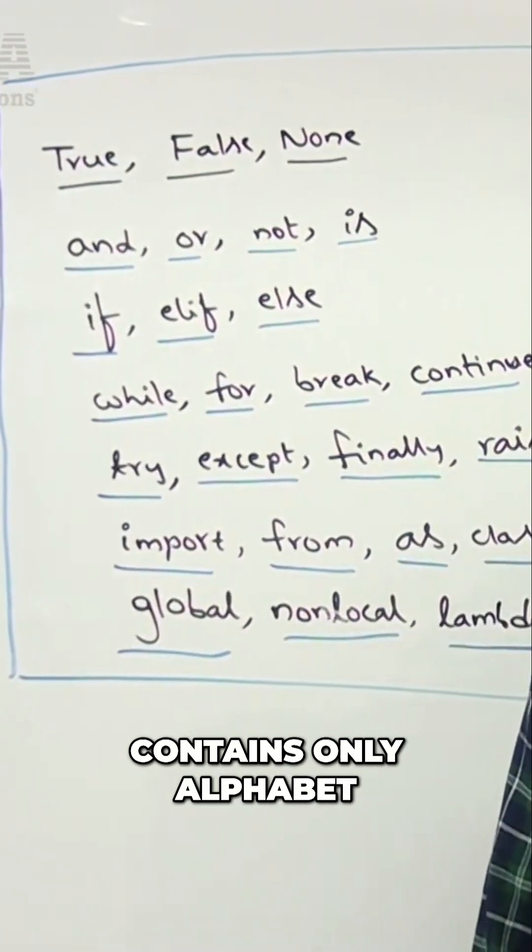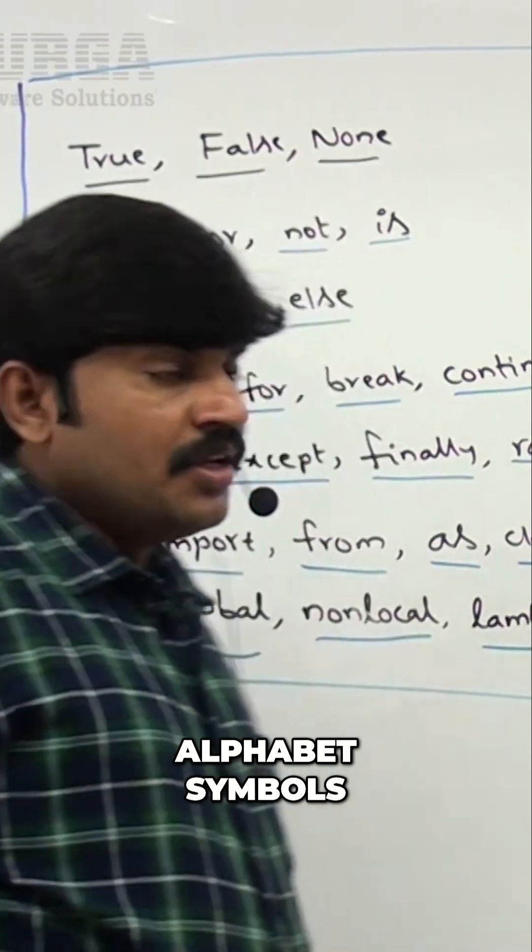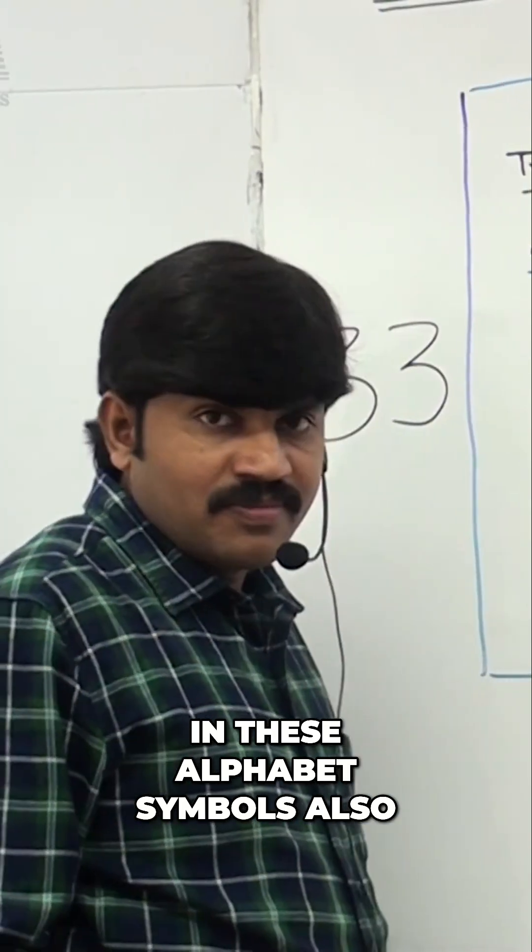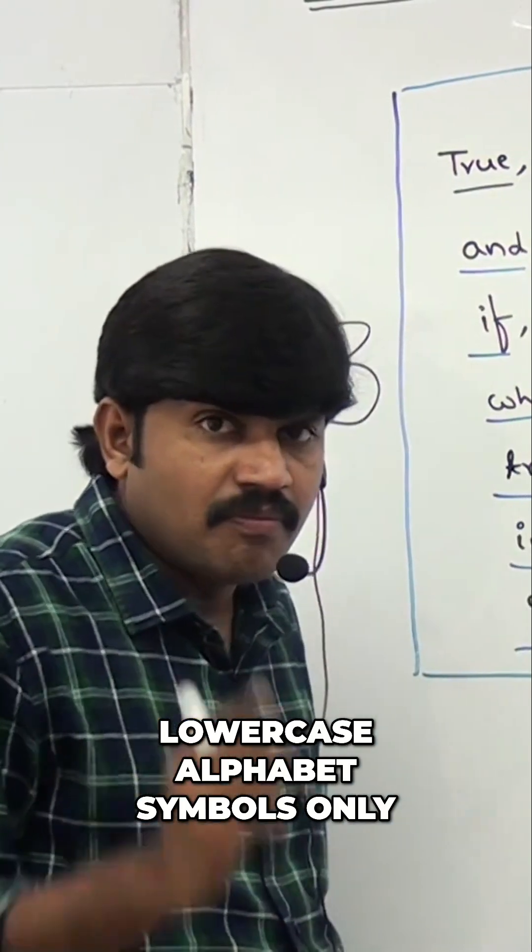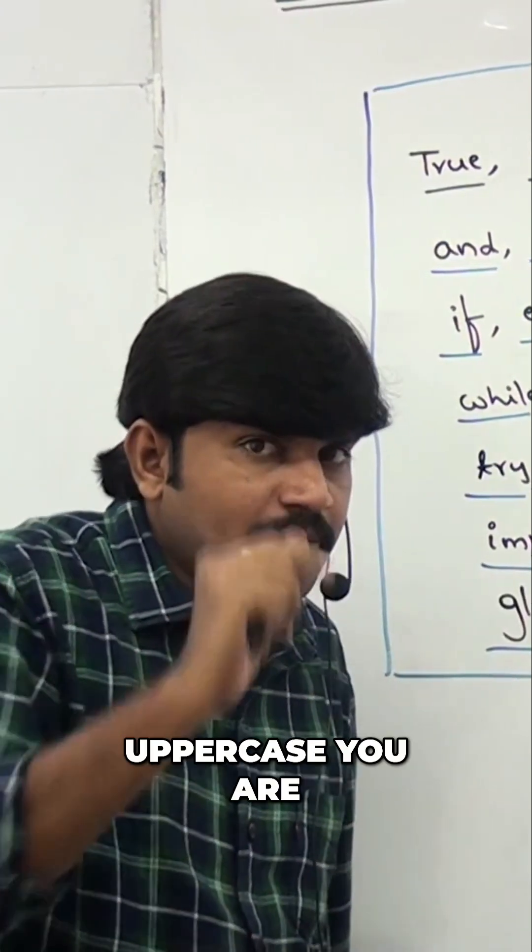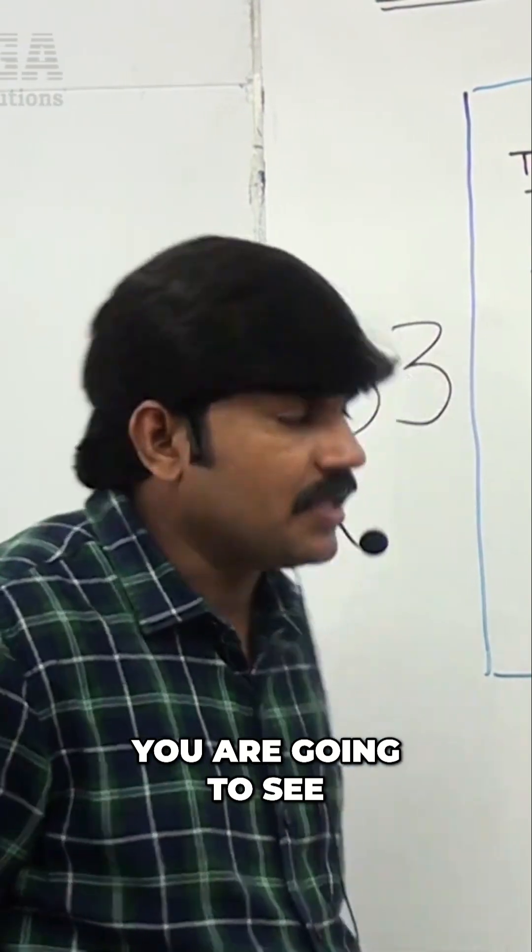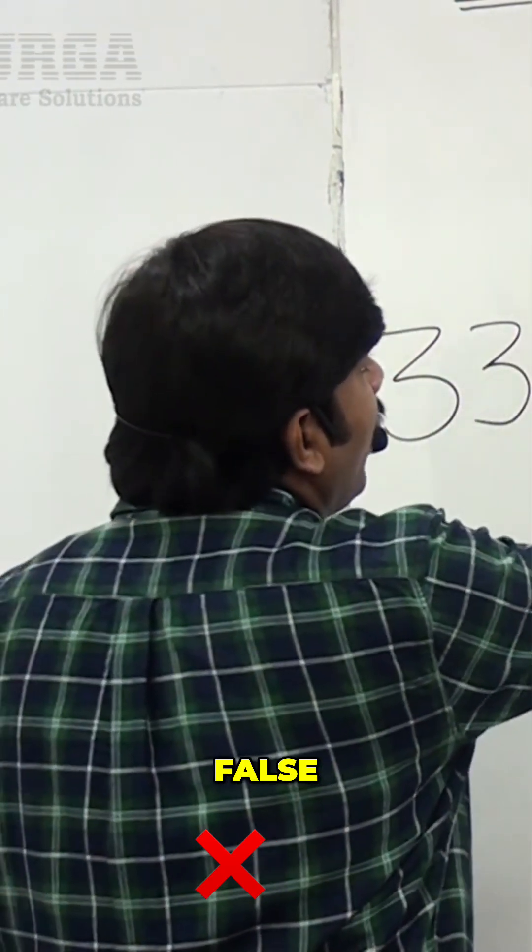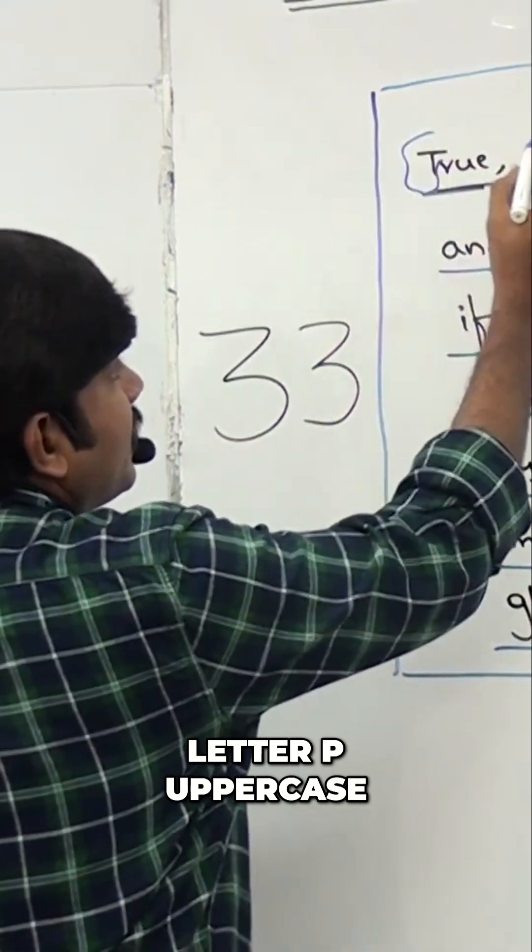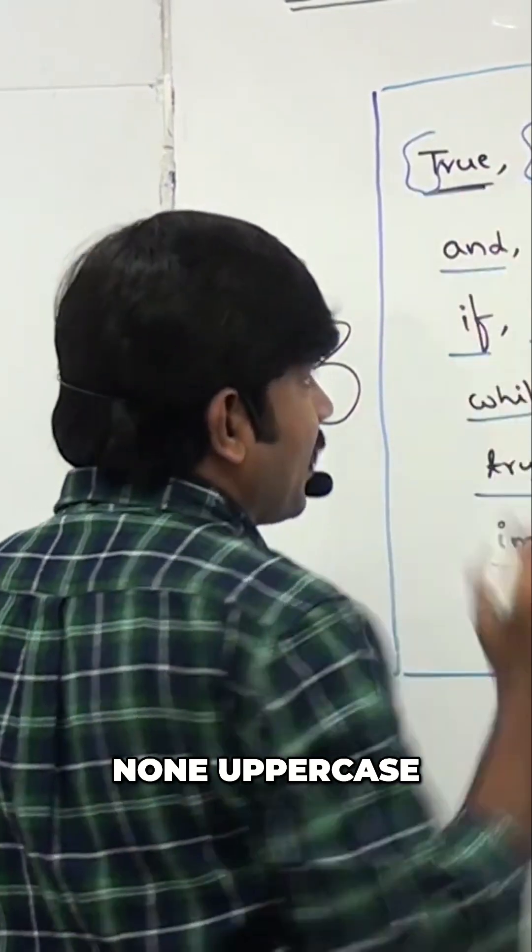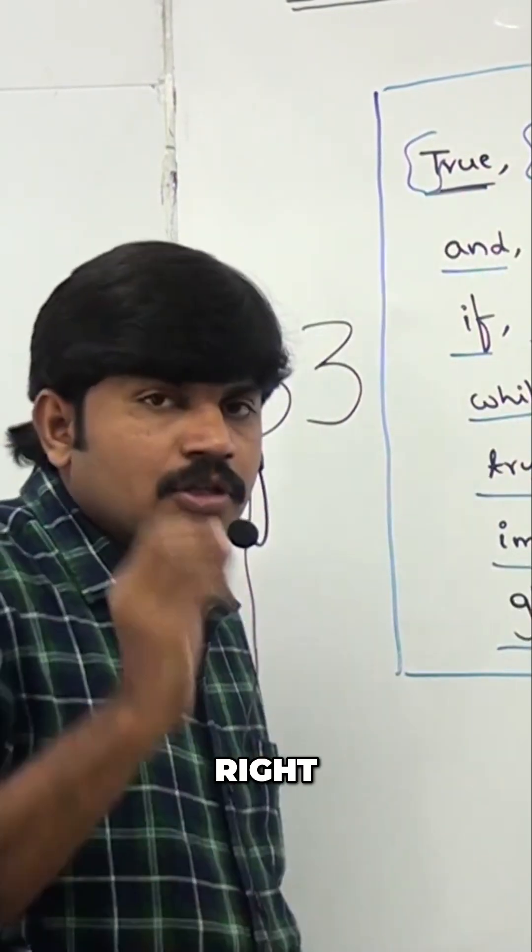These keywords contain only alphabet symbols. In these alphabet symbols, you are seeing lowercase alphabet symbols only. But only three have uppercase - True, False, None. What is the first letter? T uppercase, F uppercase, None uppercase N - these are the only exceptions.